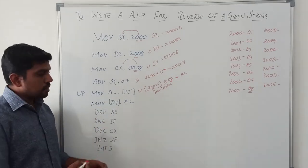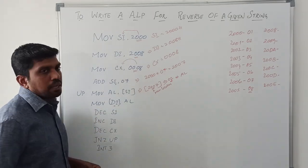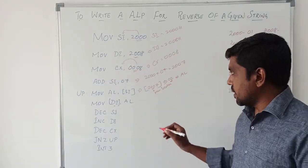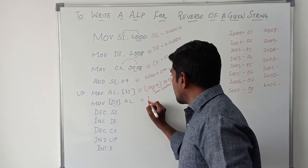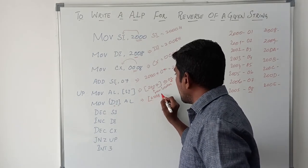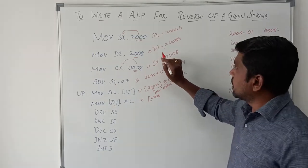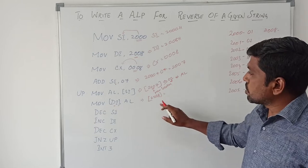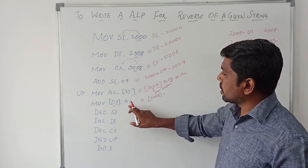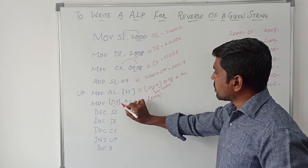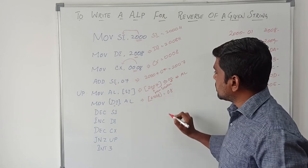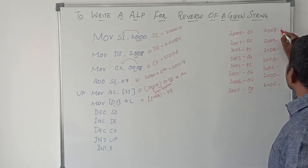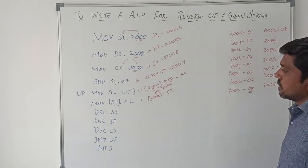Then MOV [DI], AL. Here DI value is within brackets — within brackets any value stored is considered as an address location. Here DI value is 2008. We have already declared the destination index memory location as 2008. So in this memory location, it stores the data from AL. AL contains 08. After execution of this instruction, 08 is stored in memory location 2008. Now 2008 holds the data 08.